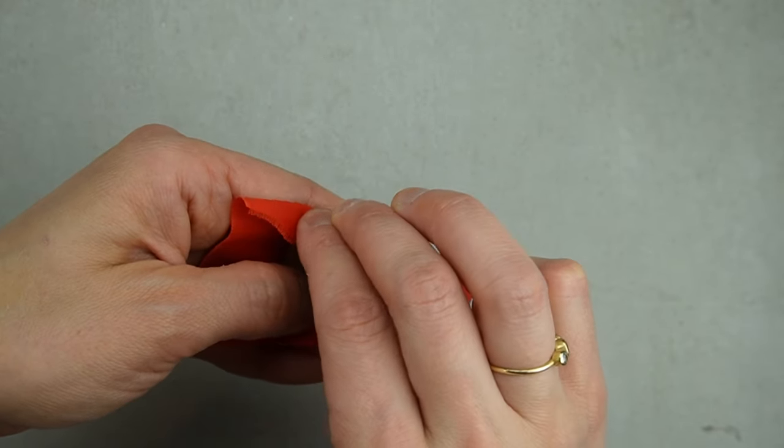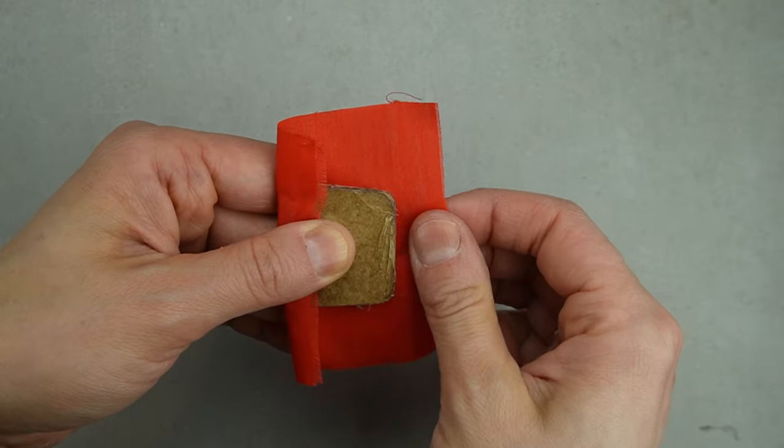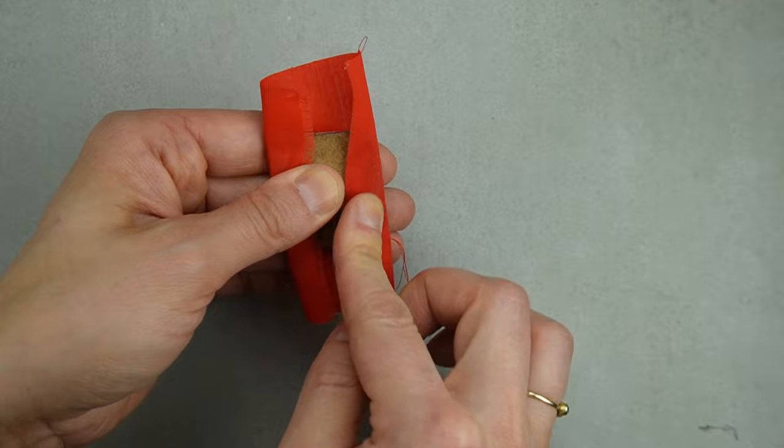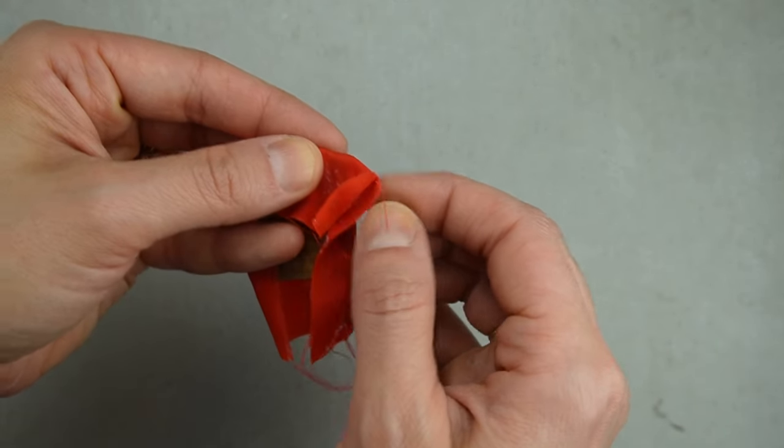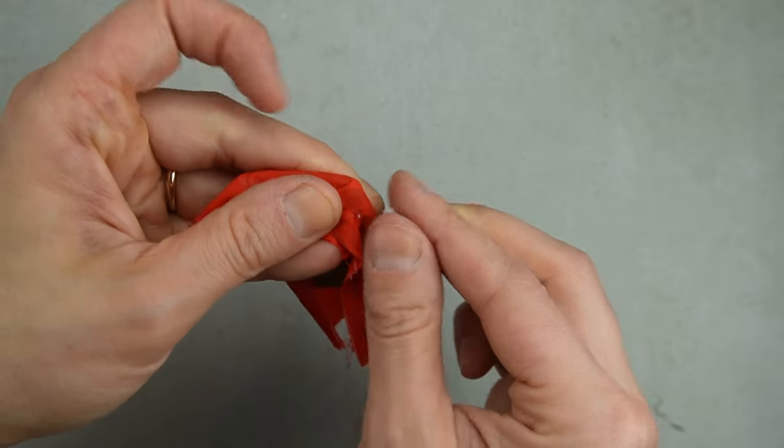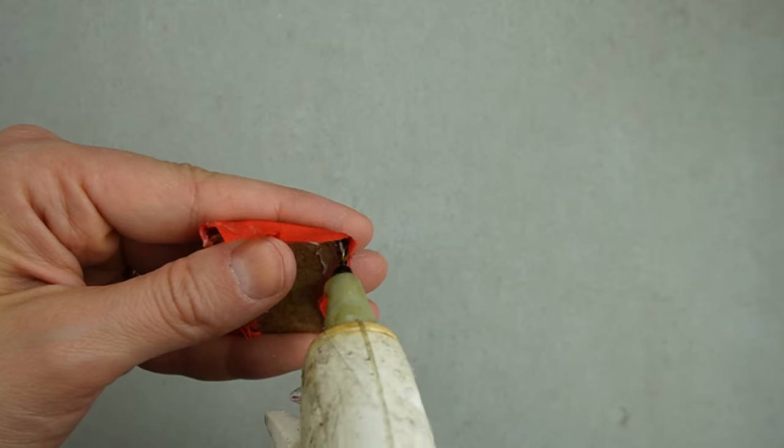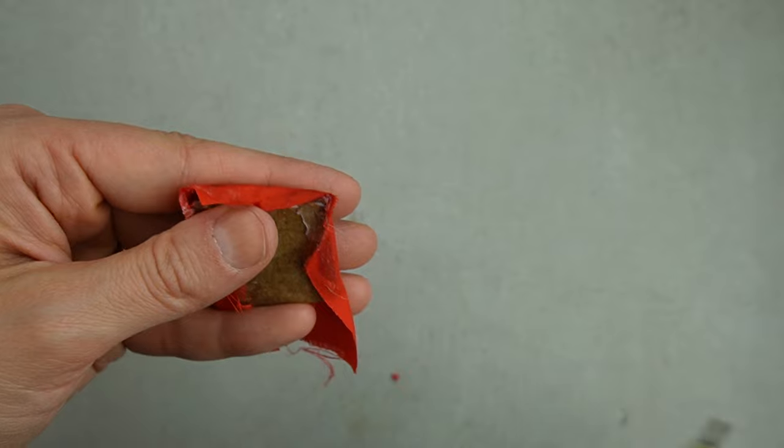To upholster the bottom cushion, I started by tacking down each of the four sides. To make it look neat and tidy, you can fold the excess fabric at the corner like I'm showing you here. That's what I should have done, but that's not what I did.